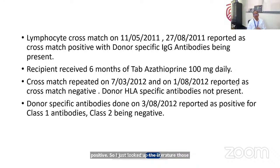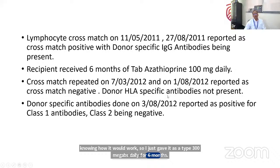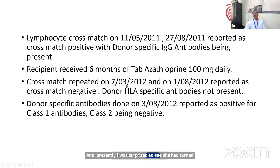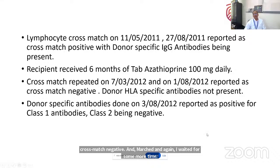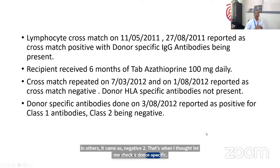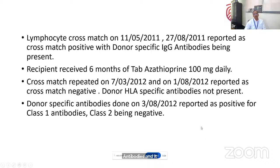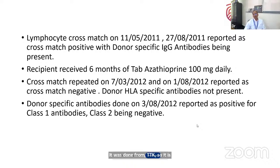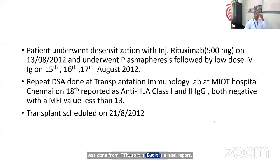In those days we used azathioprine to desensitize. I gave azathioprine 100 milligrams daily for six months. I was surprised to see she had turned cross-match negative in March, and when I waited and rechecked in August, it was again negative. That's when I checked for donor-specific antibodies, and it was reported as Class 1 antibodies — presumably more than 1000 MFI — from TTK Lab, a quite reliable report. I thought we should desensitize this patient before doing any transplant.